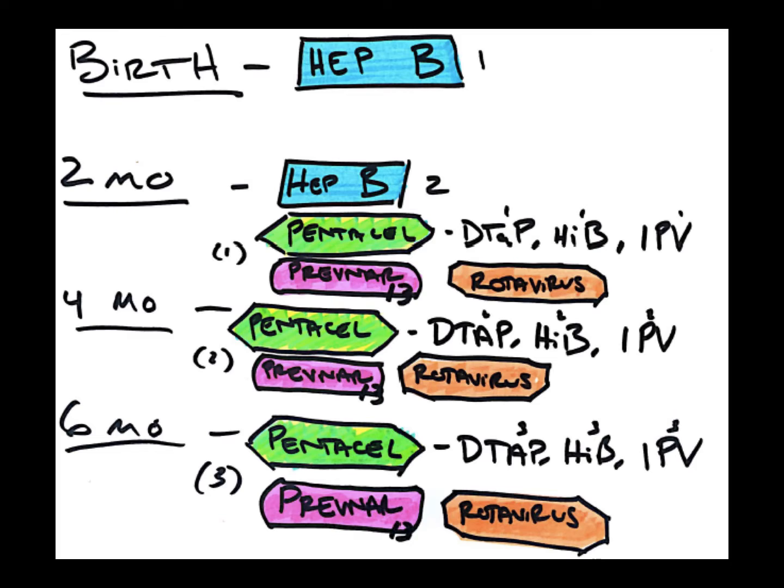Prevnar is the 13-valent pneumococcal vaccine. If you have trouble remembering which is which with the 23-valent, Prevnar is the 13, and Pneumovax is the 23. Pediatric patients do not get Pneumovax.